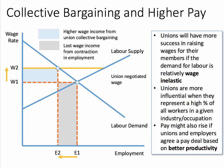Unions' bargaining strength depends on how many of the workers they represent in a given occupation. Trade unions tend to be more influential when they represent a very high percentage of all employees in a particular industry or occupation. This analysis assumes that productivity has stayed the same. It's possible for unions to negotiate higher pay and maintain employment if they agree a productivity-related pay deal.